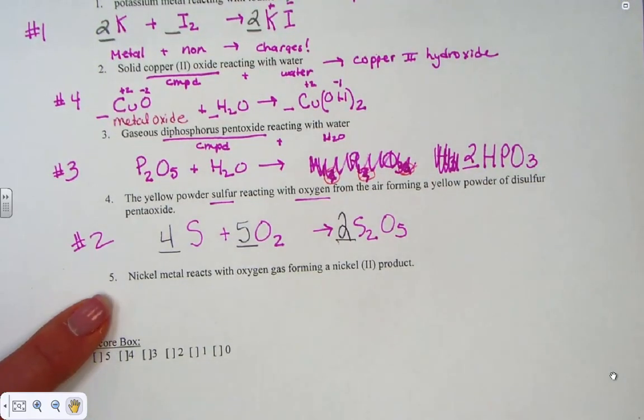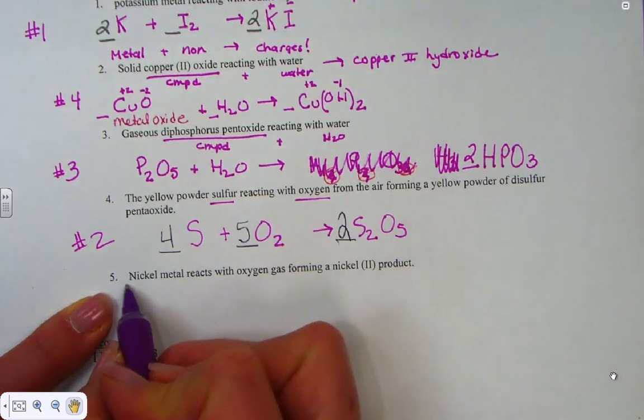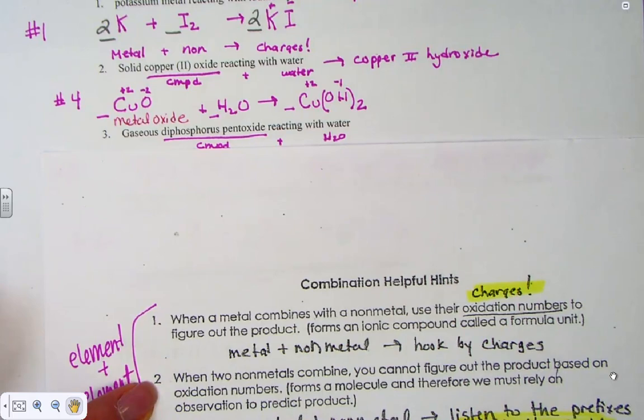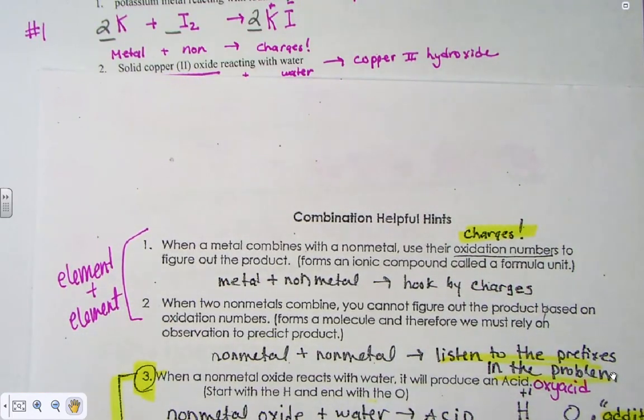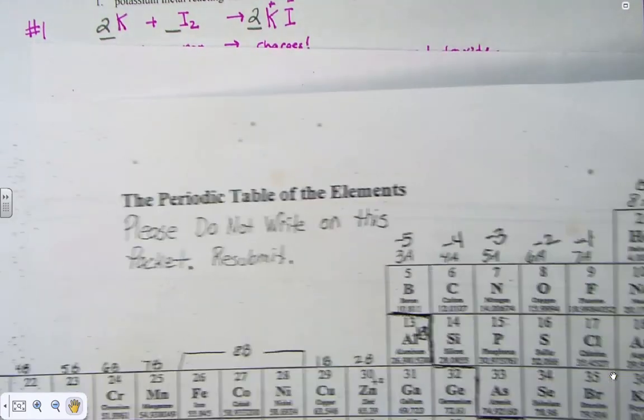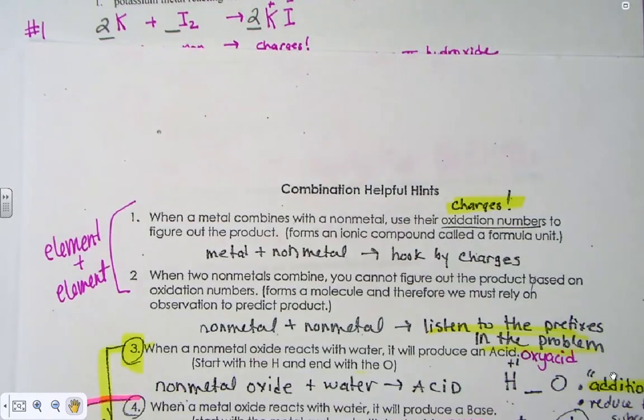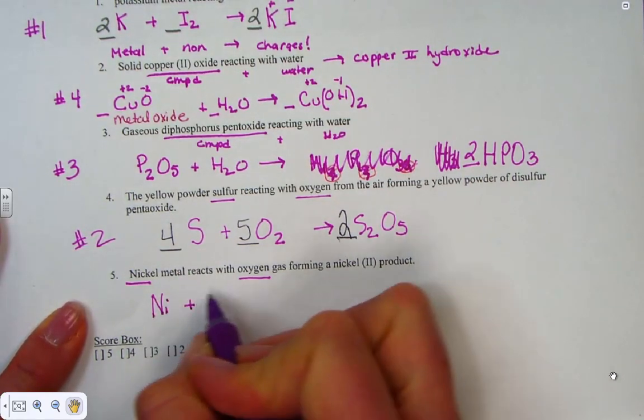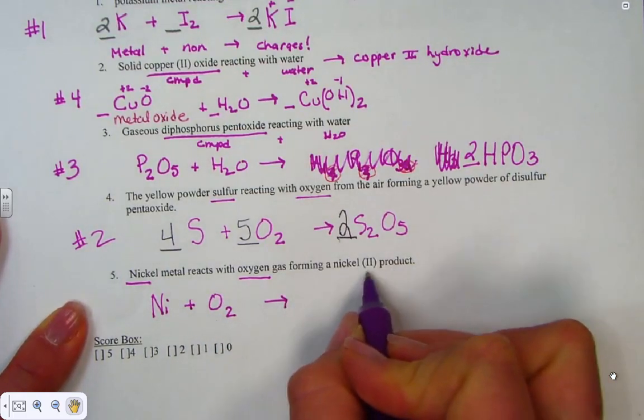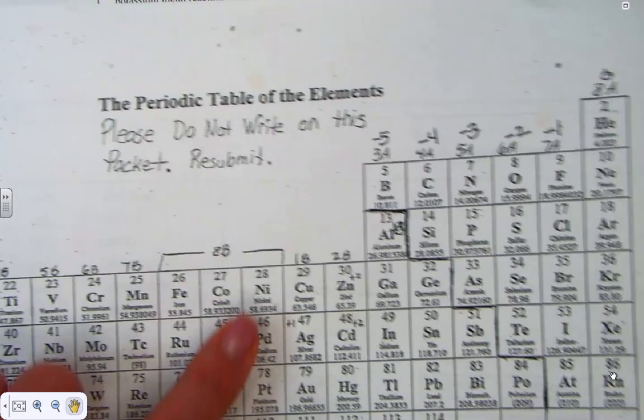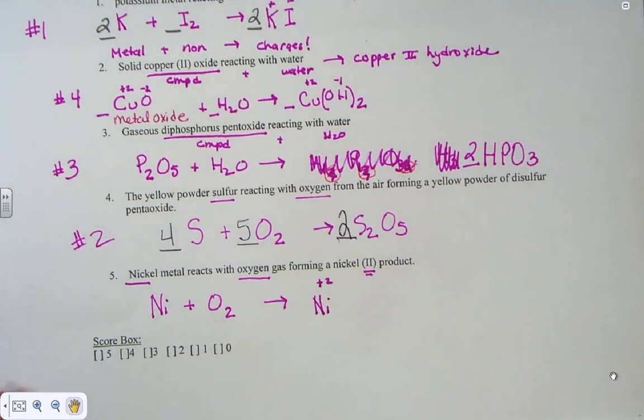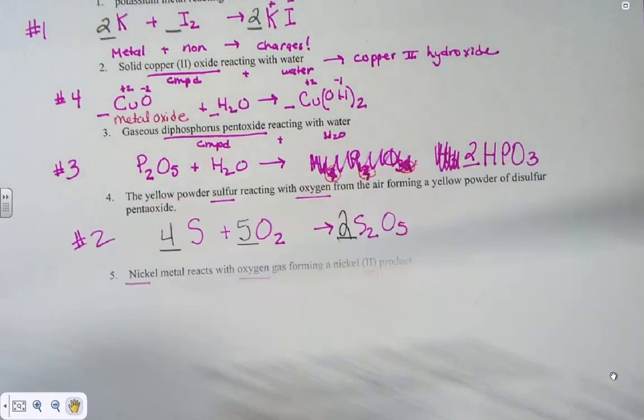One more in our combination pattern. Nickel-metal reacts with oxygen gas, forming a nickel-2 product. An element plus an element. That takes me to either helpful hint 1 or helpful hint 2. And to determine is it 1 or number 2, we decide what kinds of elements are combining. Clearly we see nickel is a metal. Nickel gives us the metal, and since we don't know its charge by where it lives, it's telling us in the product. When nickel, which is a metal, combines with elemental oxygen, it forms a nickel-2 product. Friends, the reason that's there, you wouldn't know what charge to use for nickel. We have to be told using that Roman numeral.